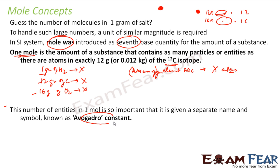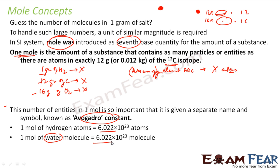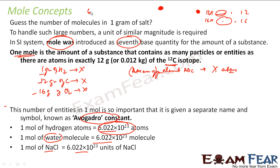This number X is called the Avogadro constant. Its value is 6.022 × 10²³. So we say 1 mole of hydrogen will have this many atoms, 1 mole of water molecules will have this many molecules, and 1 mole of sodium chloride will have this many formula units of sodium chloride. This number is very critical.